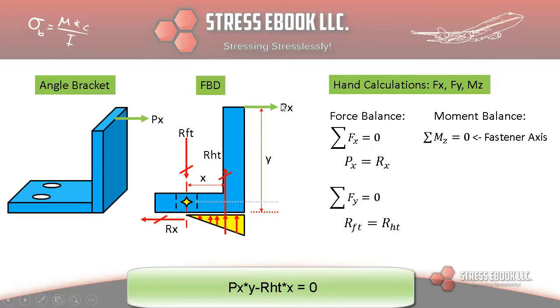This is our moment due to PX about the fastener. And this moment has to equal, because we're taking the moments about the fastener axis, we don't need to consider the RFT here. So we're going to use our HT. Our HT over here from the fastener axis is X, so that's our horizontal distance from this point, and this is causing a balancing moment type effect.